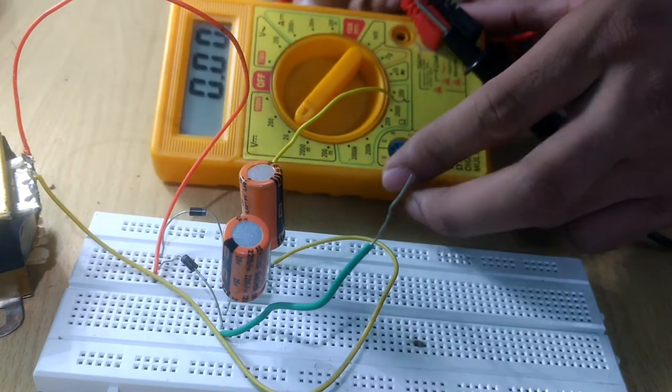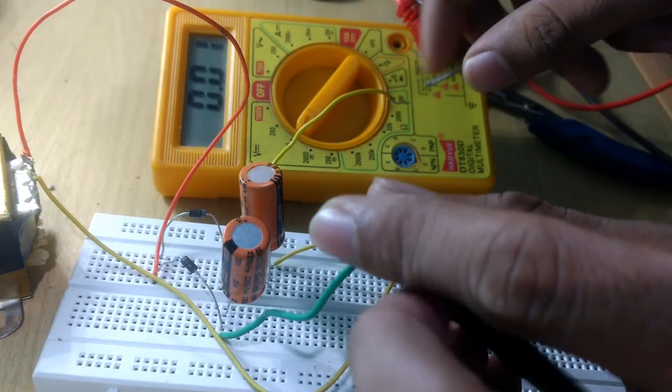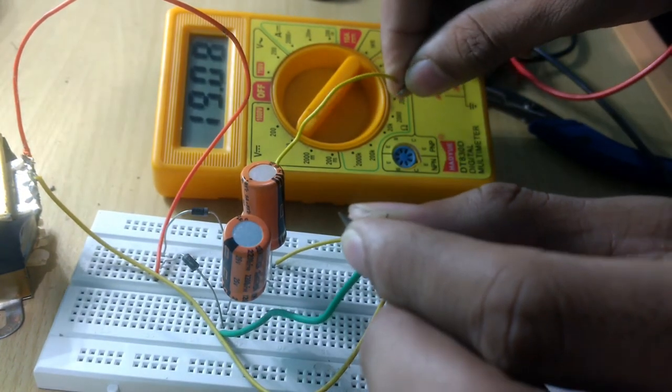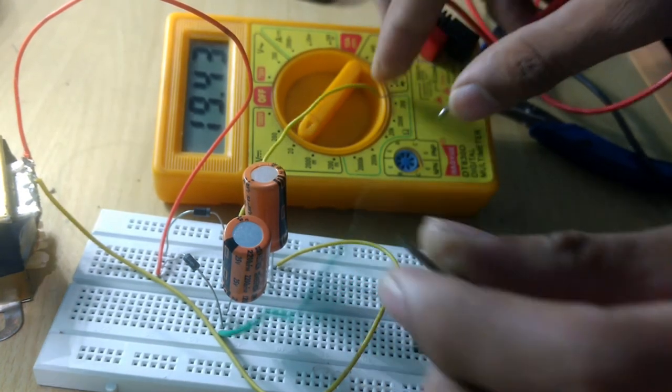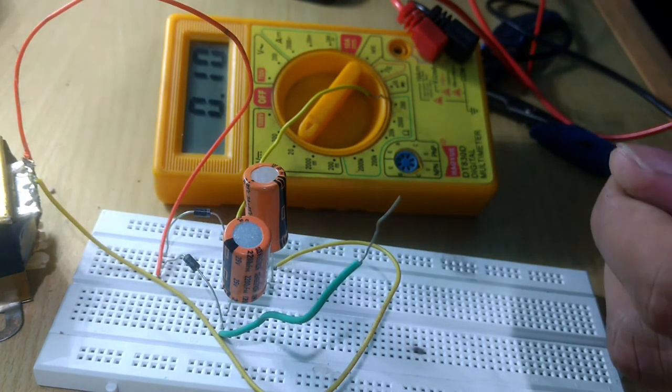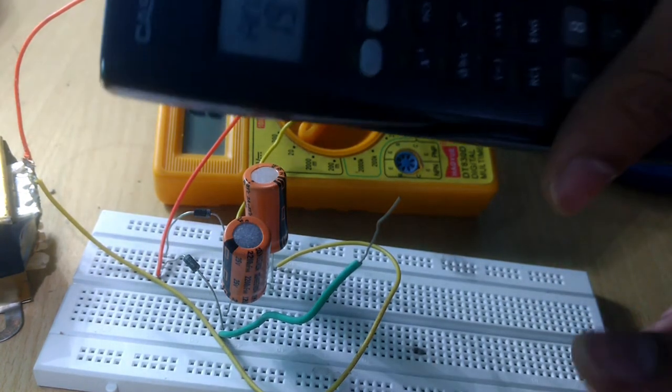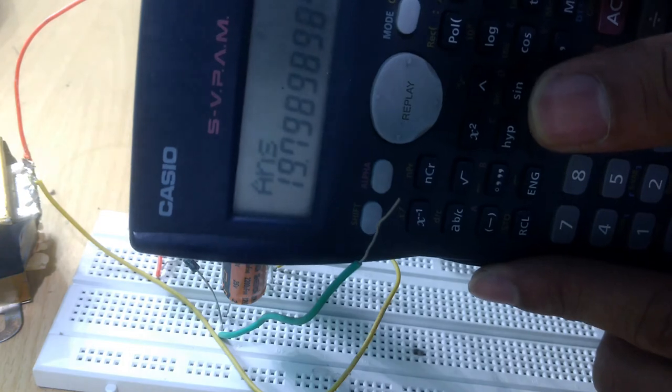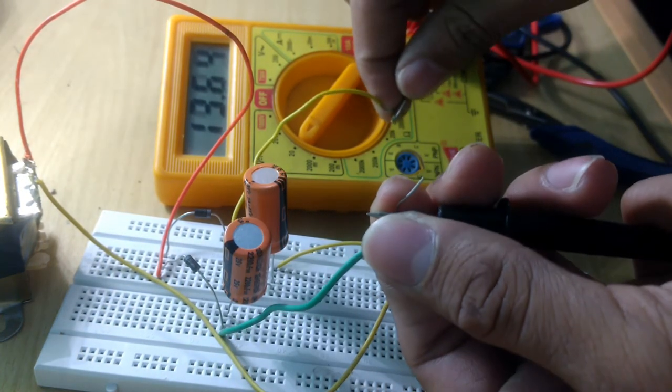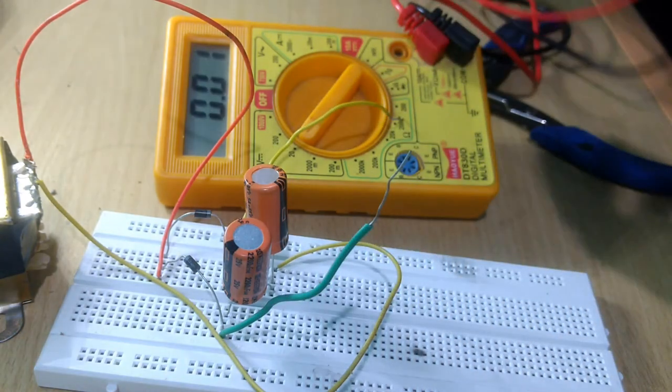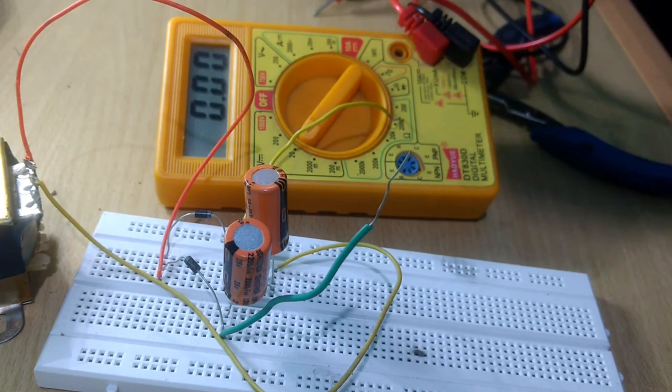As I said, so let us now check the DC output voltage. Yeah, so the output DC voltage is 19.43, 19.4 something like that. So it is approximately equal to the answer which we calculated theoretically, 19.79.